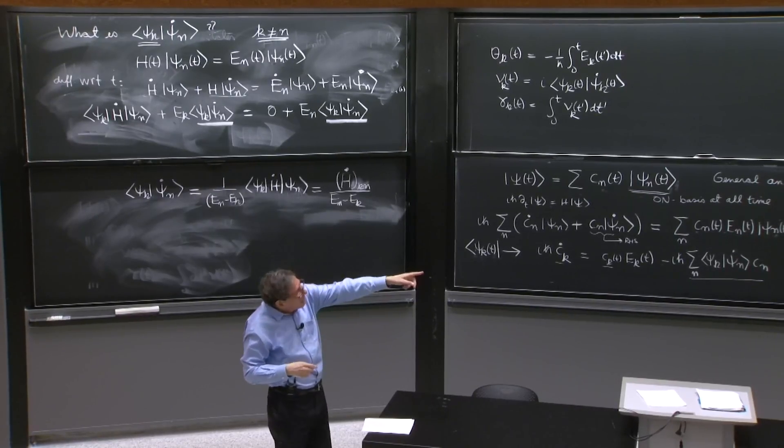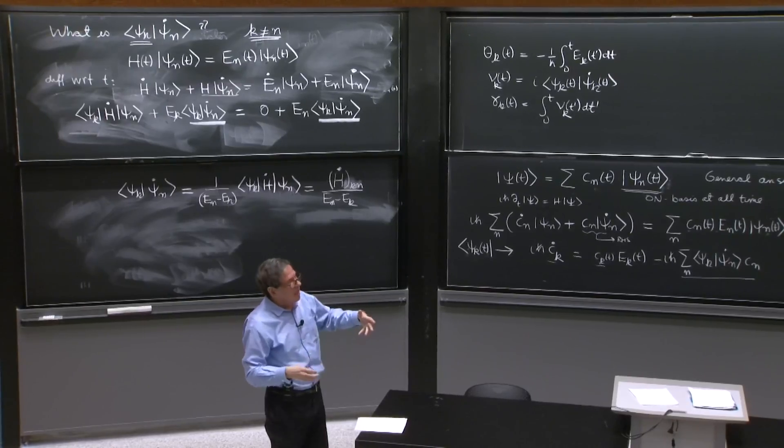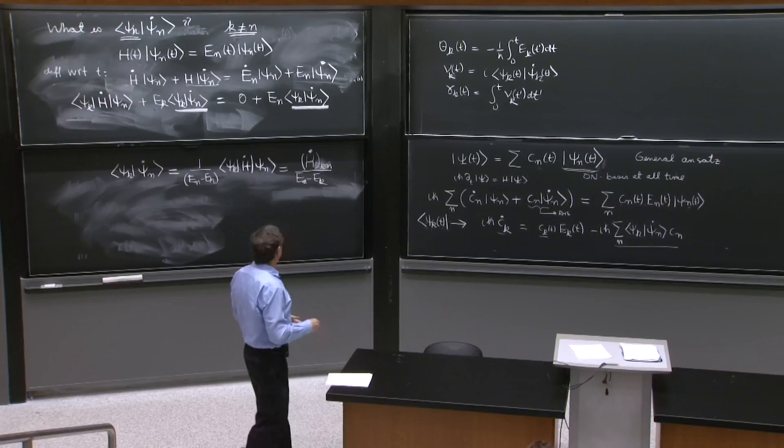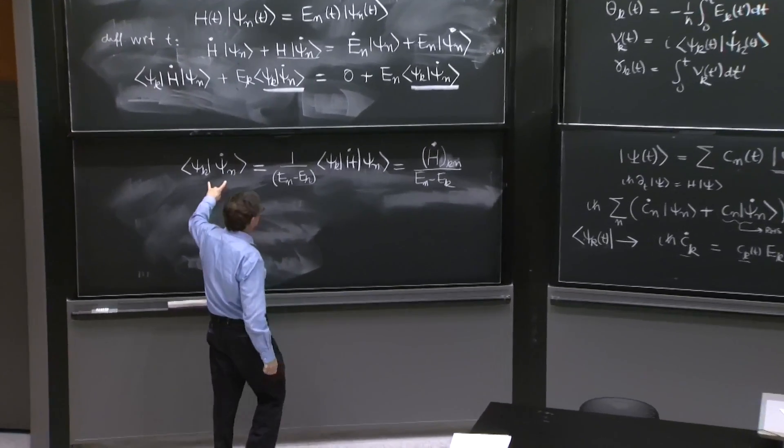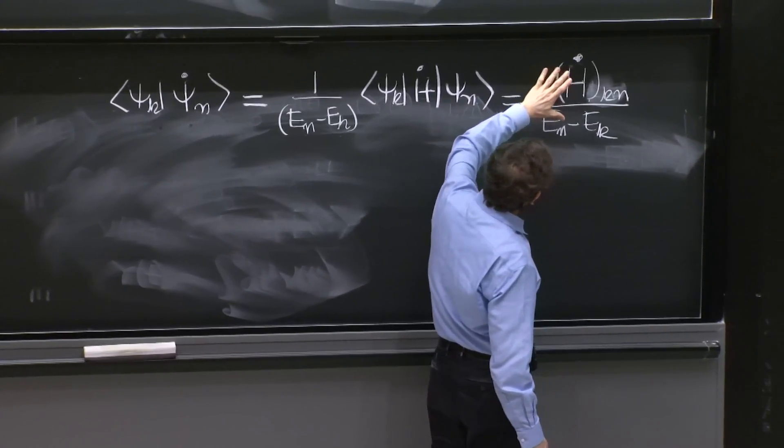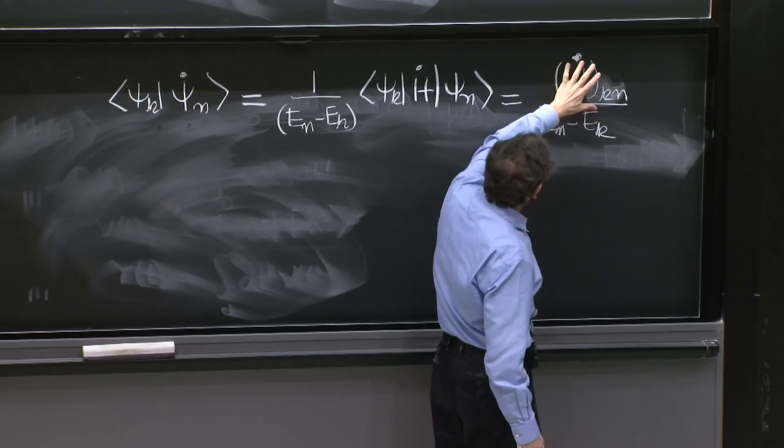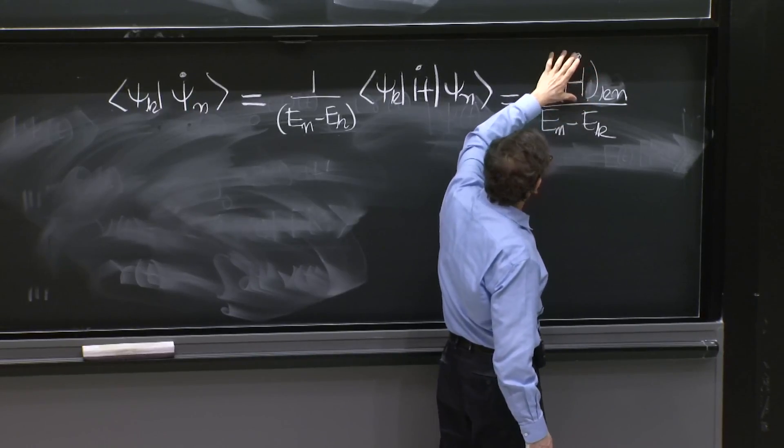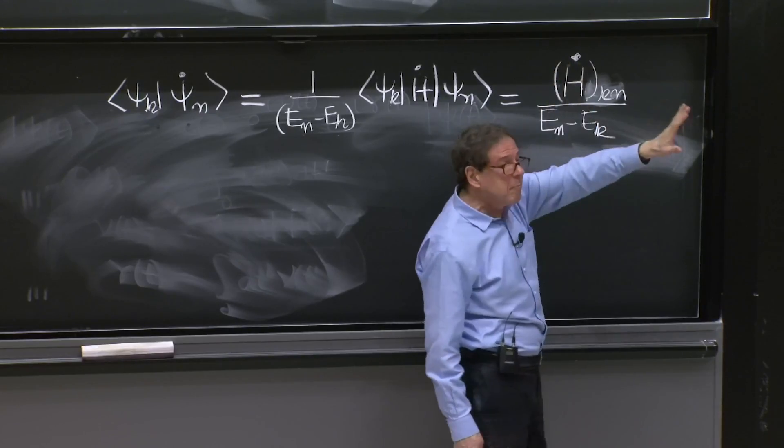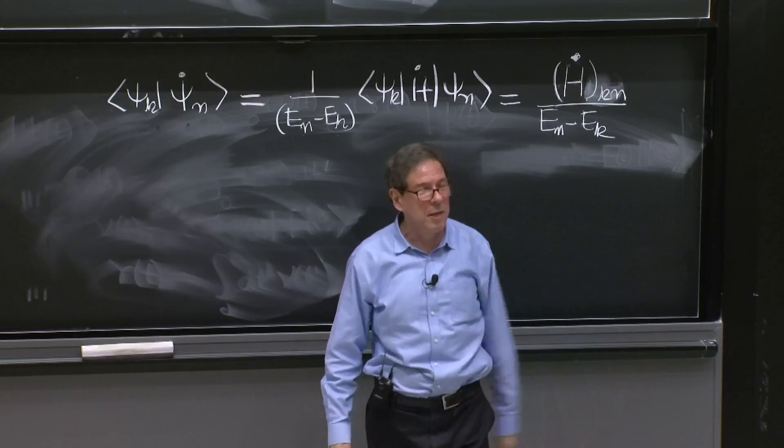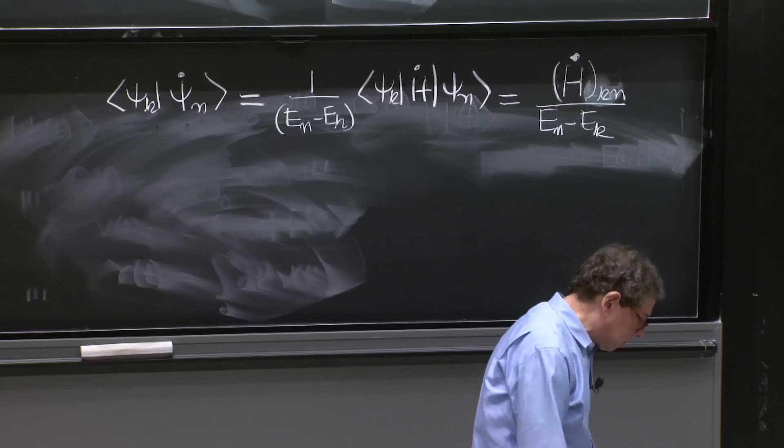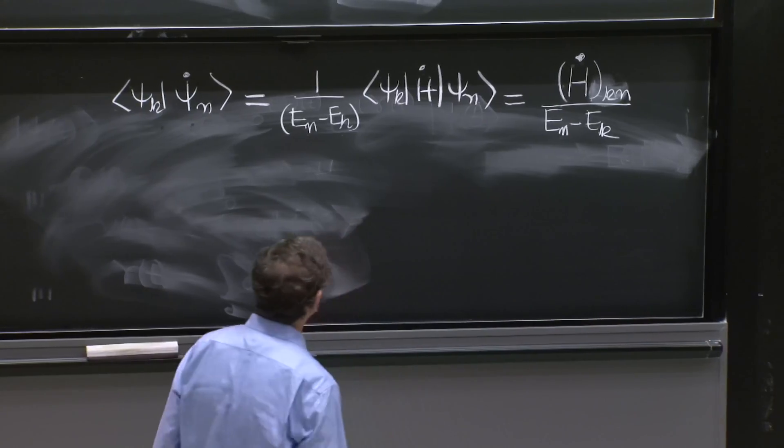You could say that term must be small because the instantaneous energy eigenstates must be slow, and that's true. But this equation makes it clear that you have here a matrix element or some information about the time rate of change of your Hamiltonian. And if that is slow, then this term is small. And presumably, a small term in a differential equation has little effect.